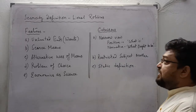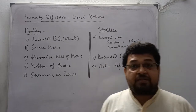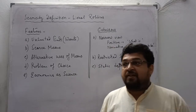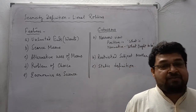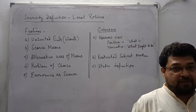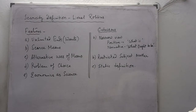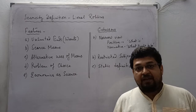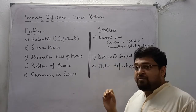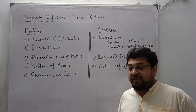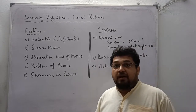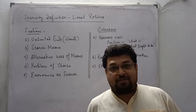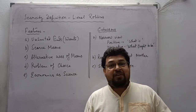The next definition we have learned is the scarcity definition of economics by Lionel Robbins. In the definition, he tried to mention that economics deals with human behavior as a relationship between ends and scarce means. From that definition we can identify certain features he tried to highlight. Number one: unlimited wants — if you consider human wants, think about how many types of desires you have.